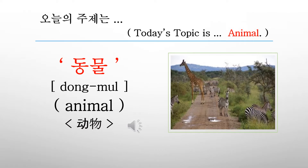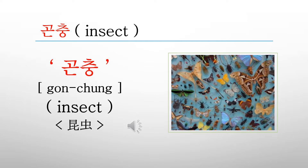Today's topic is 동물. 동물 is called an animal in English, and it is called 動物 in Chinese. In this chapter, we will study the Korean word for calling an insect, generally saying a worm. Insect is called 곤충 in Korean, and it is called 昆虫 in Chinese. Let's see the Korean words for insects.